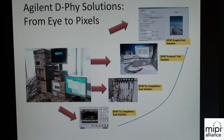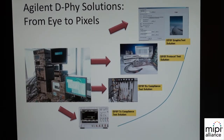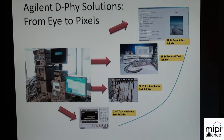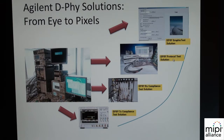Agilent provides a whole set of equipment for MIPI DeFi, basically testing at the physical layer — transmitter as well as receiver — with different solutions. There is also a tool set available for protocol layers, where you can basically look at packets and look at different bits inside of packets, and decode the CSI or DSI protocol.